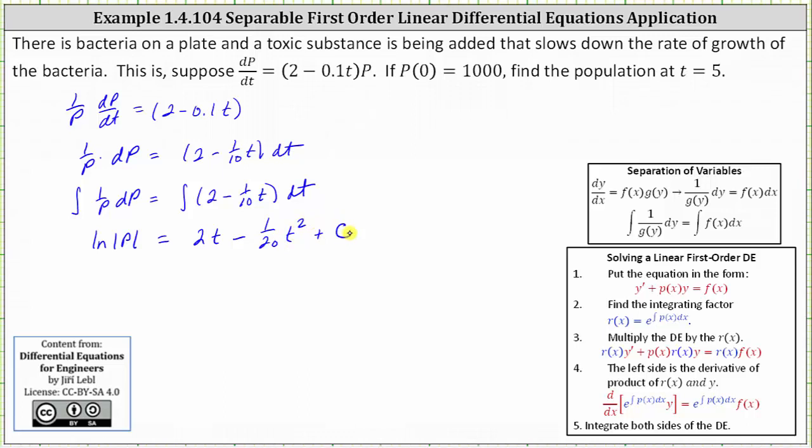And now we need to solve the equation for p. We can do this two ways. We can write the log equation as an exponential equation, or we can exponentiate both sides of the equation with the base of e. Remember, natural log is log base e. The equivalent exponential equation is e^(2t - 1/20 t² + C) must equal the absolute value of p. And we can drop the absolute value because the exponential term is always greater than zero.